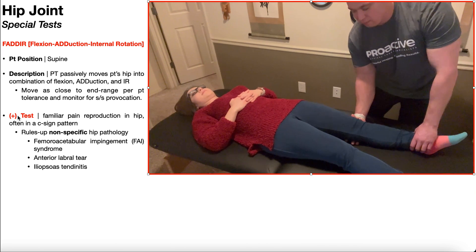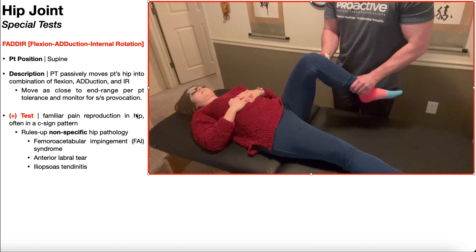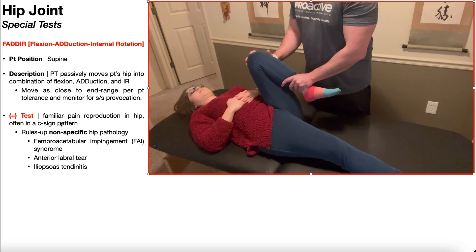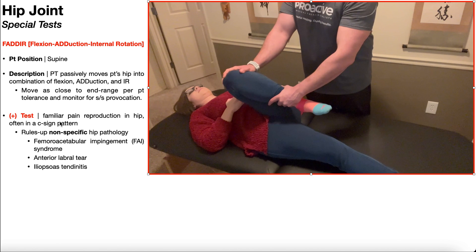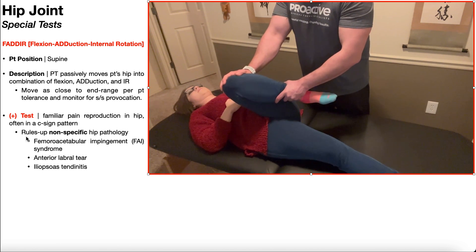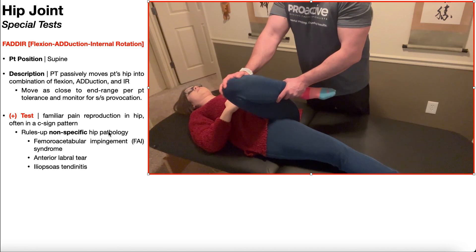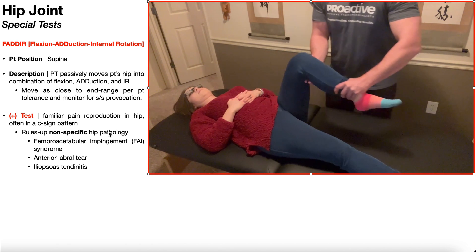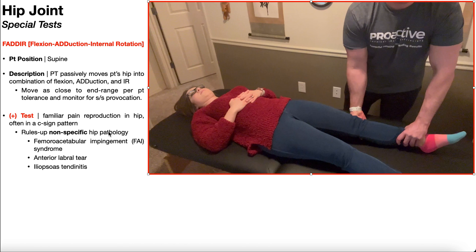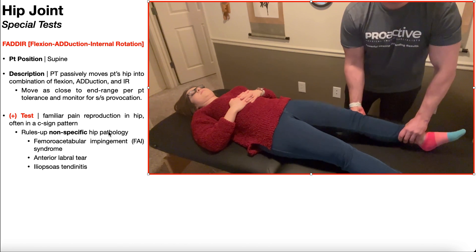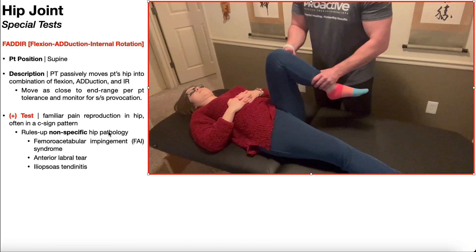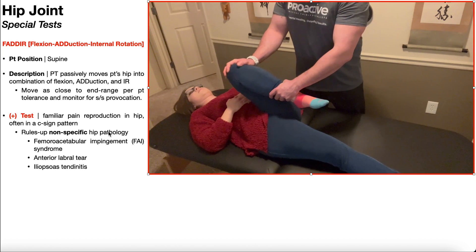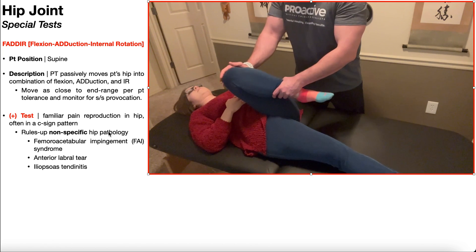A positive test involves familiar pain reproduction in the hip that often occurs in a C-sign pattern. Like the hip scour test, a positive FADER test rules up non-specific hip pathologies, meaning it doesn't point to one condition specifically. To narrow it down, you need to conduct a thorough subjective and objective examination, and rely on other special tests.